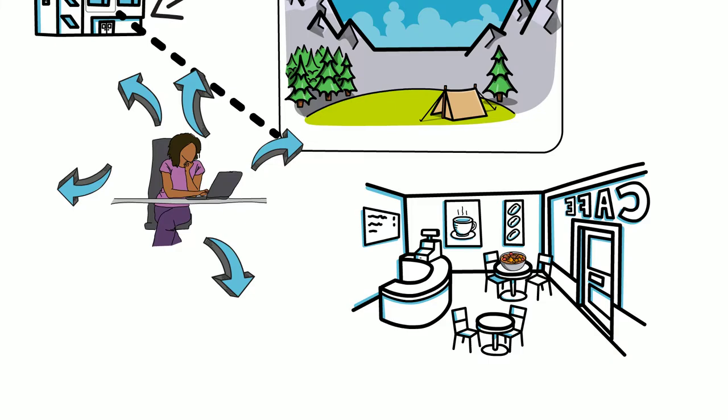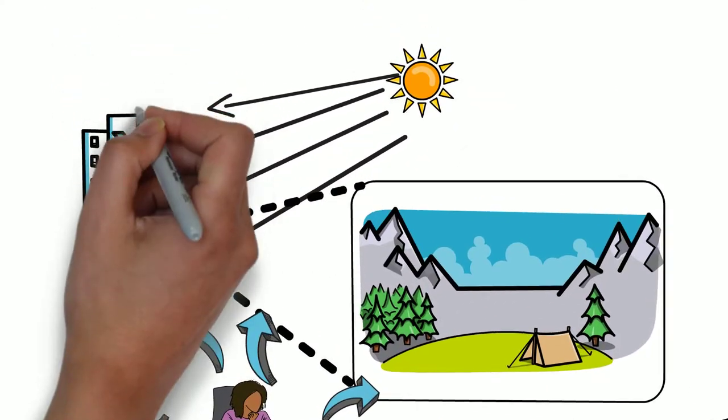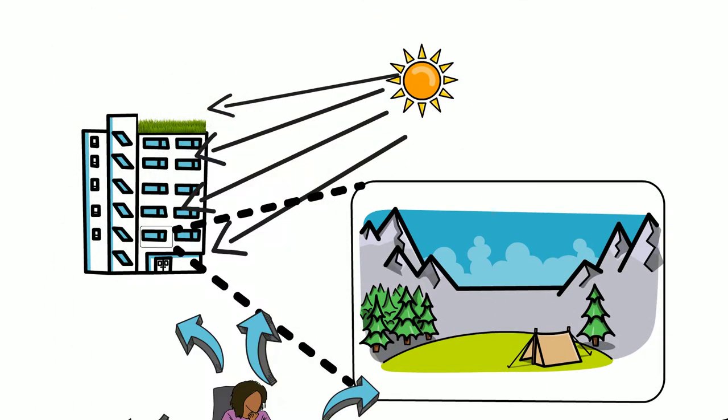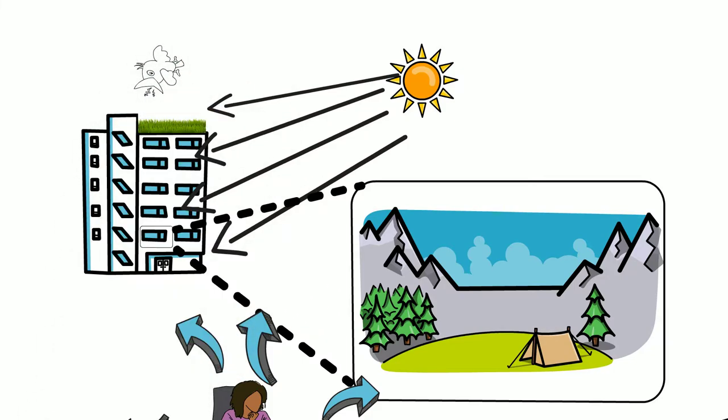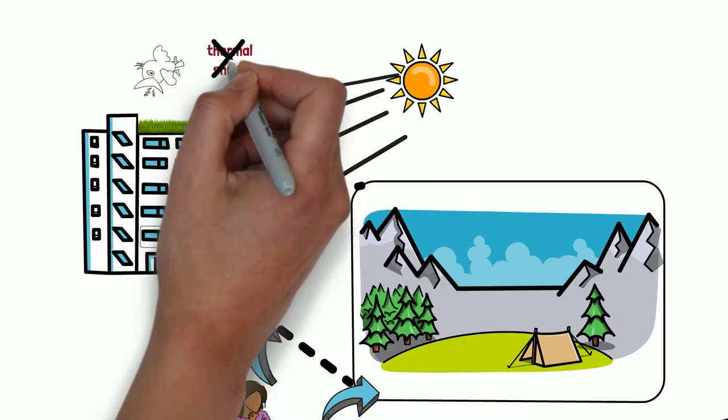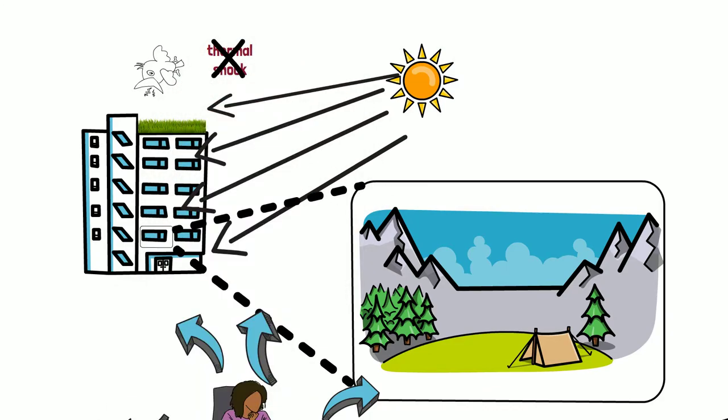At night, the system would flush the building with cool evening air. A layer of native plants would cover the building's roof, making it more attractive to sunbirds and absorbing water runoff, while at the same time protecting the roof from thermal salt and ultraviolet degradation.